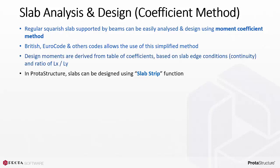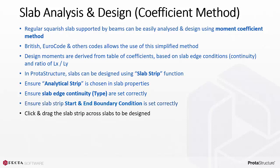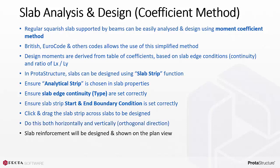In ProtoStructure, slabs can be designed using the slab strip function. Ensure the analytical strip is chosen in the slab properties. Ensure slab edge continuity or type is set correctly. Ensure slab strip start and end condition is set correctly. Click and drag the slab strip across slabs to be designed — do this in both horizontal and vertical orthogonal directions. Slab reinforcement will be designed and shown on the plan view. Use the slab analysis and design function to generate the report.